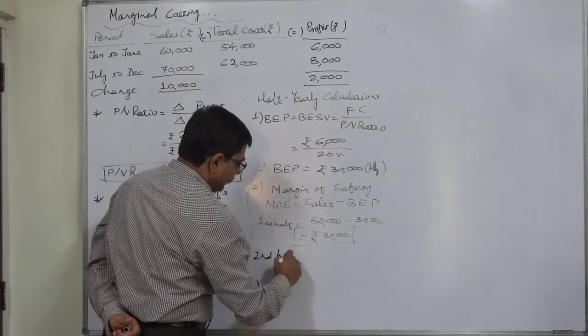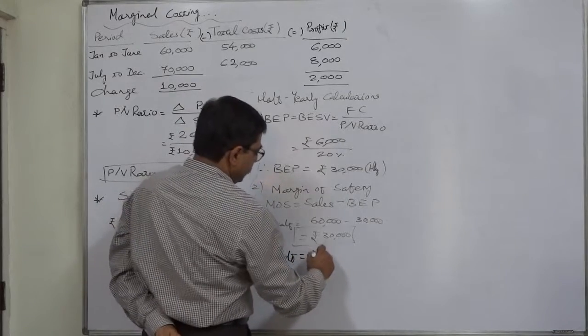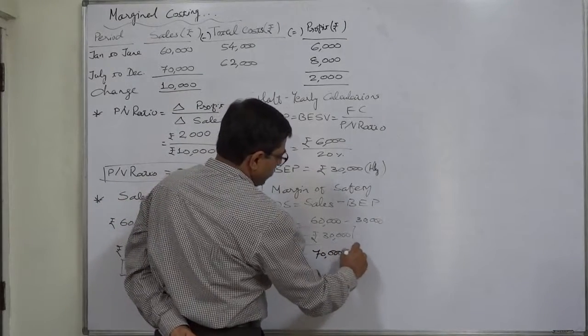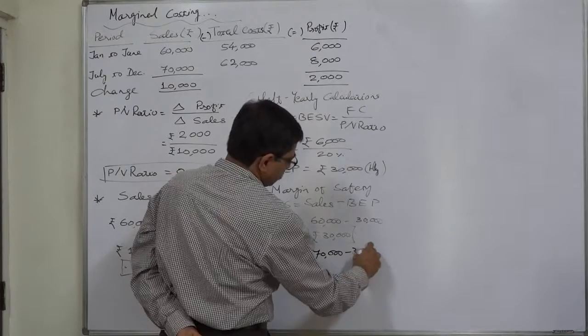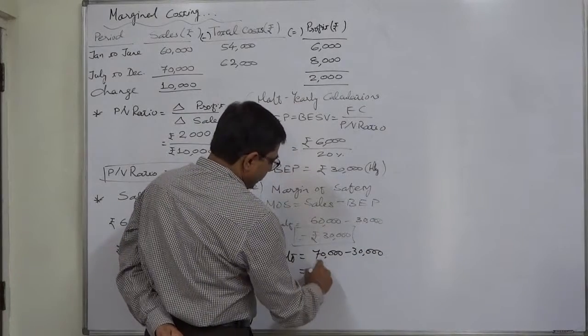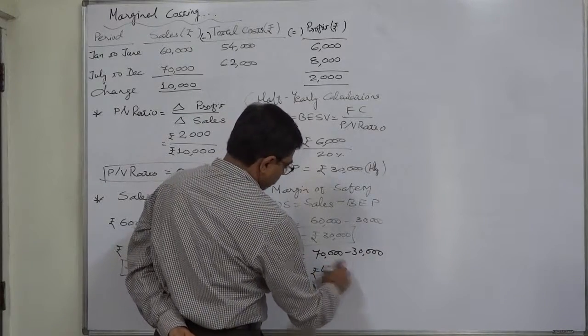Margin of safety for the second half will be rupees 70,000 minus BEP of 30,000, so for the second half margin of safety is rupees 40,000.